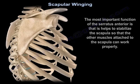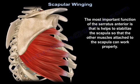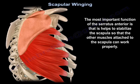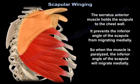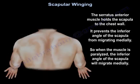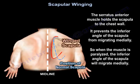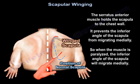The most important function of the serratus anterior is that it helps to stabilize the scapula so that the other muscles attached to the scapula can work properly. The muscle holds the scapula to the chest wall, and it prevents the inferior angle of the scapula from migrating medially. So when the muscle is paralyzed, the inferior angle of the scapula will migrate medially.